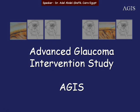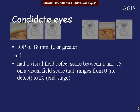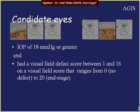The Advancing Glaucoma Intervention Study, or AGIS, aimed to determine whether uncontrolled medically primary open-angle glaucoma patients should have laser or trabeculectomy as the next therapeutic intervention. The goal was to keep patient pressure below 18, and to investigate the association between IOP control after surgical intervention and visual field deterioration. This study is mainly a surgical intervention study.